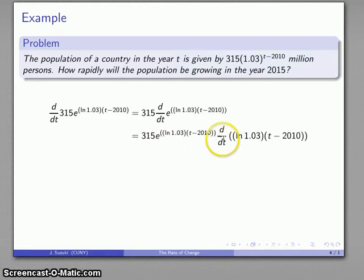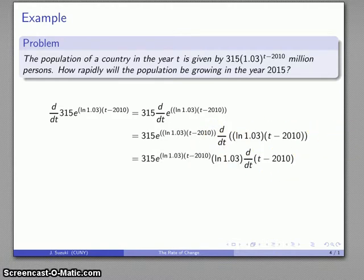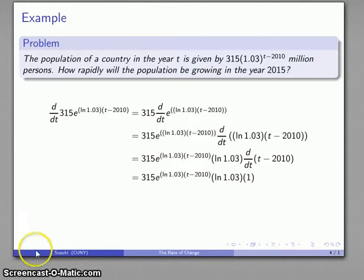I need to find the derivative of this thing here. That's a constant times something. ln(1.03) is a constant. The derivative is constant times the derivative of the function, which is just going to be one.